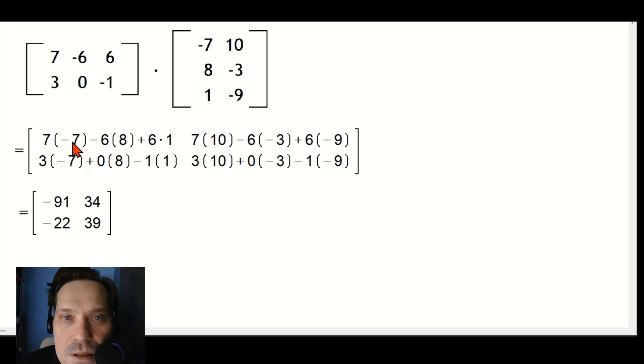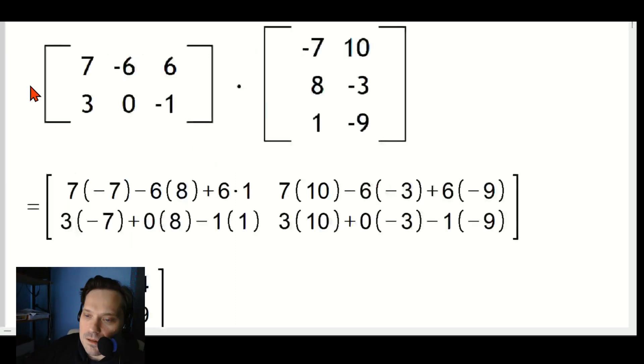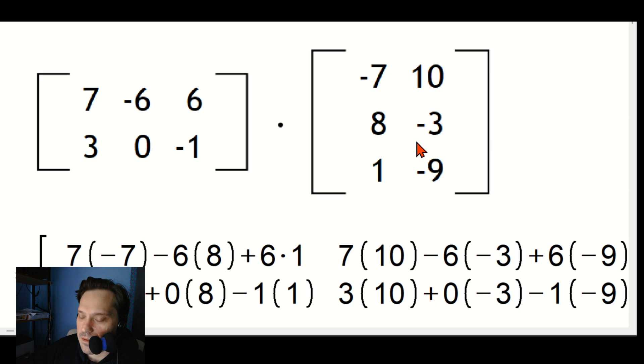Okay, hi guys, let's multiply some matrices together. So we have this matrix by this matrix. What are the features of these? This is a 2×3 because it's got two rows and three columns.